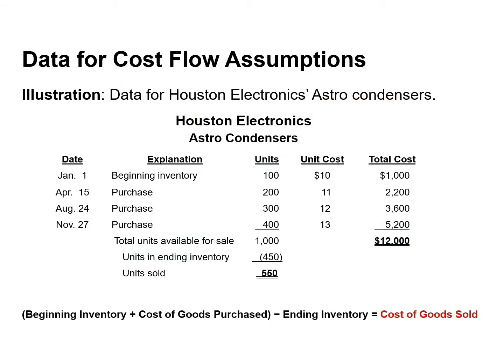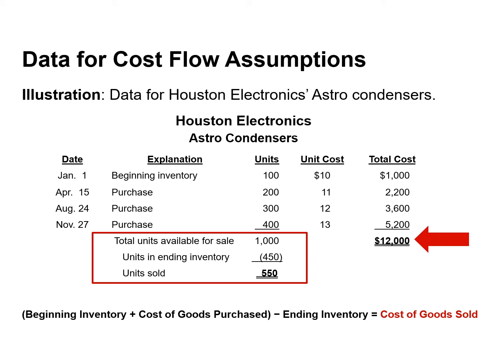To illustrate the three assumed cost flow methods, we will use the data for Houston Electronics. Houston had a total of 1,000 units available to sell during the period, representing beginning inventory plus purchases. The total cost of 1,000 units is $12,000, which represents the cost of goods available for sale. A physical inventory taken at December 31st determined that there were 450 units in ending inventory, so Houston sold 550 units — found by taking 1,000 and subtracting the 450 units. The value assigned to ending inventory will depend upon which cost flow method we use.